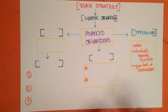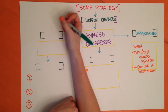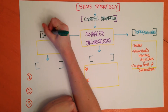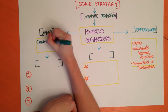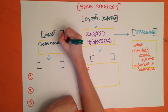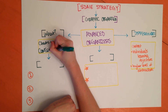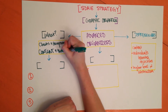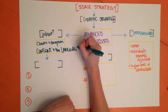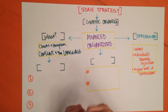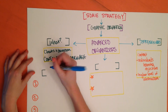Advanced organizers use charts and diagrams to help the student master both the content and the language. There are three phases to presenting the advanced organizer.